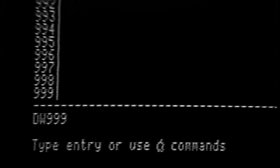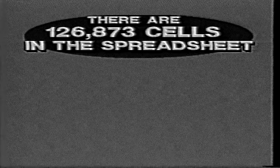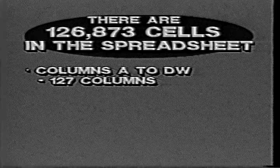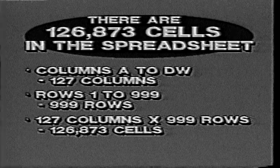Now move the cell locator to the bottom of the spreadsheet. Press Open Apple down arrow and notice that the row numbers change. Keep on pressing Open Apple down arrow until you hear a beep. The window quit moving down the spreadsheet when it reached row 999. Now you know just how big this spreadsheet really is. Altogether, there are 126,873 cells in the spreadsheet — that's because there are 127 columns and 999 rows, and 127 times 999 equals 126,873.